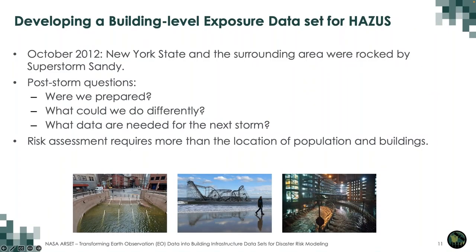In 2012, New York State and the New York Metro area were rocked by Superstorm Sandy — a large hurricane that caused widespread flooding and damage. There was a lot of examination of whether agencies were prepared and what data would be needed for the next storm. Risk assessment requires more than just population data and building locations. You need information on vulnerability and building characteristics, both of which are really important for understanding risk and potential impacts.